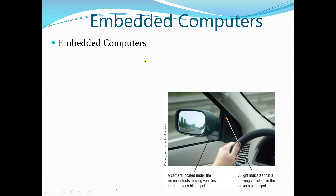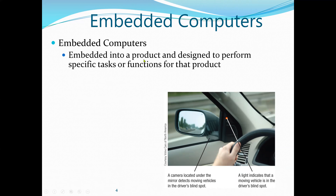First, we start with embedded computers. Embedded computers are normally embedded into a product and designed to perform a specific task or function for that product. An example would be our vehicles or cars, which may have a special computer embedded into them. These computers are not general purpose — they are used for a special or specific task in the vehicle. Other examples include televisions and refrigerators.